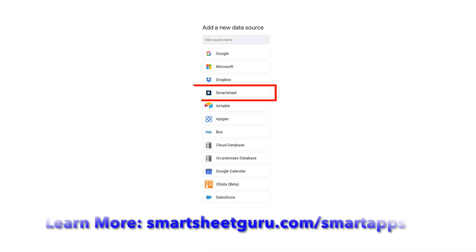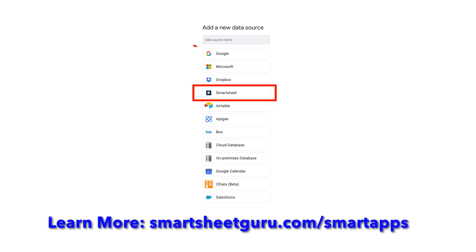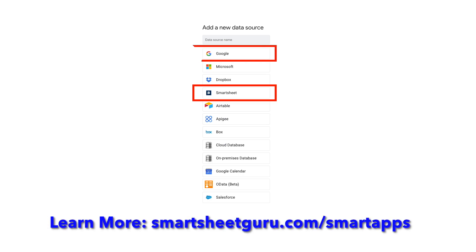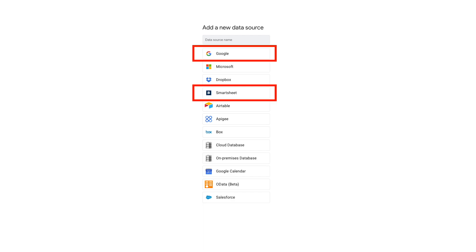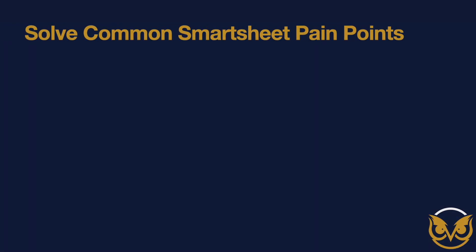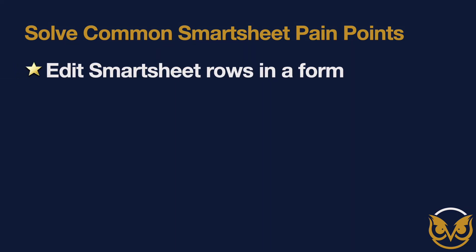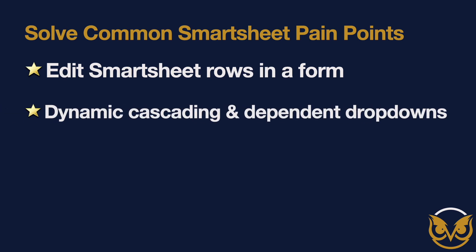AppSheet easily integrates with Smartsheet as well as Google Sheets and select other data sources you may already use. You can use AppSheet to solve common pain points in Smartsheet. The pain point I will demonstrate here is the ability to edit rows with a form and utilize dynamic cascading drop-downs based on the selection of other drop-downs in the form.